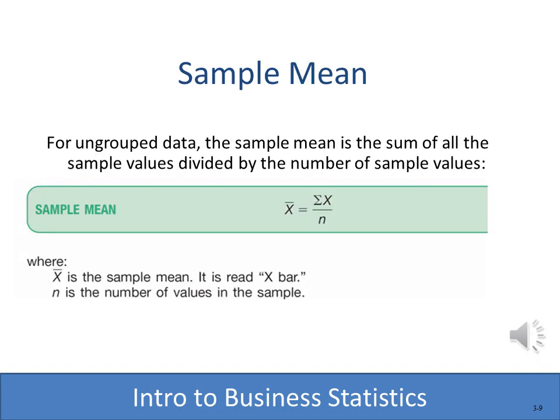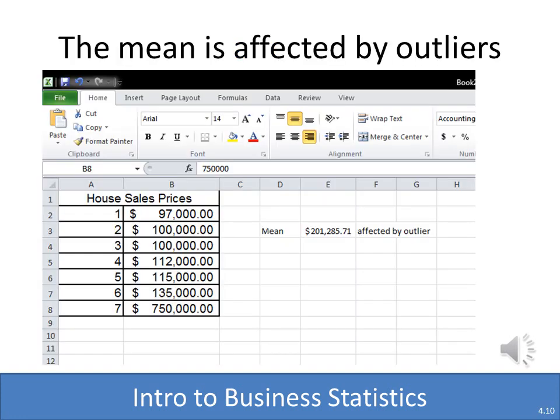Here we see the formula for the sample mean, and it's essentially the same — you sum up all the values and divide by the number. In this case, because it is a sample, n is lowercase, representing the number in a sample, and instead of using mu, we use X-bar, which represents the sample mean. Here we have an example of a sample mean with house prices — house number seven is way off track, it's at the end of the hill, in a cul-de-sac, five stories and 16,000 square feet, and it doesn't really fit the neighborhood. When we compute the sample mean, we would say that the central tendency is 201,000, which is higher than anything else here. So one of the drawbacks of using the mean is that it is affected by outliers, as we see in this case.